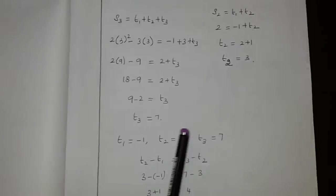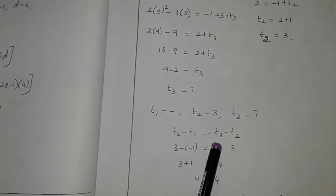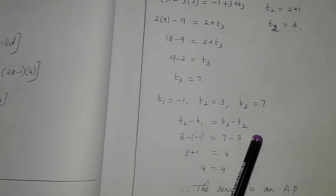Then T1, T2, T3, these are the 3 terms. To prove this is an AP, T2 minus T1 must be equal to T3 minus T2.